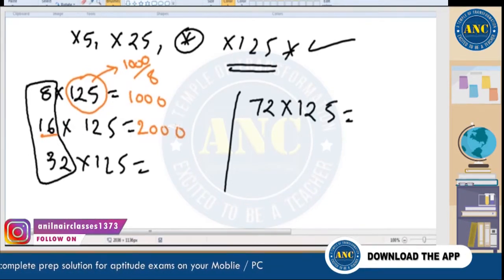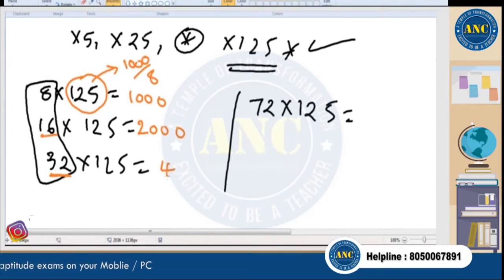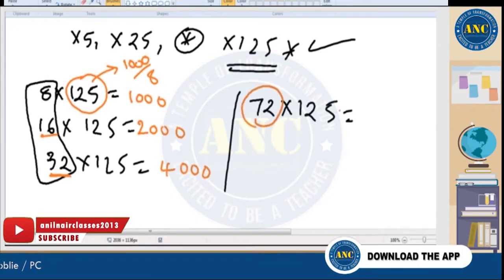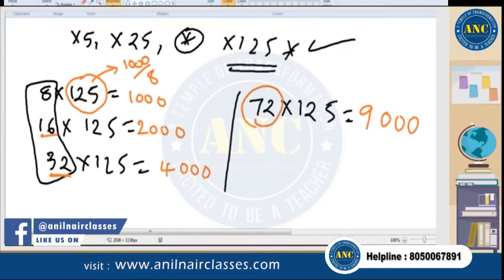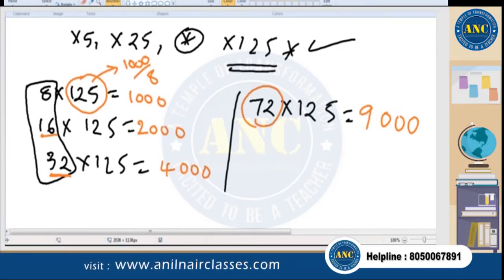So divide 16 by 8 to get 2, then add 3 zeros. Divide 32 by 8 to get 4, add 3 zeros. Divide 72 by 8 — 8 nines are 72 — add 3 zeros. Like this, you can multiply any given number with 125 easily.